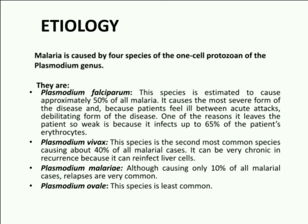Next is Plasmodium vivax. It is the second most common species, responsible for about 40% of all malaria cases. It can be very chronic in reoccurrence because it can reinfect liver cells.